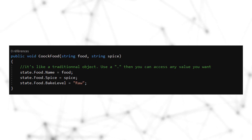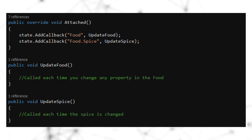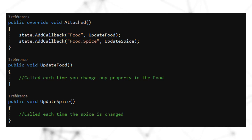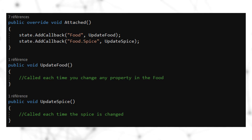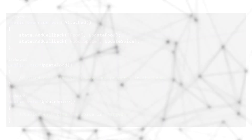To update an object in code, we do something like: state.food.property = newValue. As soon as we modify any property of the object attached to our state, if we have a callback attached to the object, it will be called. In our case we attached 'update_food' to the food variable, so modifying name, spice, or bake level triggers that callback. If we only attached a callback to food.spice, then only the 'update_spice' callback fires.